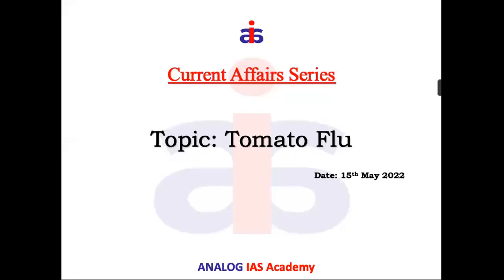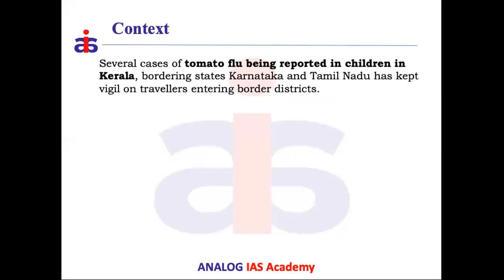Another science topic: tomato flu. Recently in Kerala, some cases were detected which were identified as tomato flu. As these cases were detected, the neighboring states Andhra Pradesh and Karnataka increased their vigilance on the movement of people coming from Kerala, so that the spread can be contained. People showing symptoms will be stopped at the border itself so these states will not get affected.